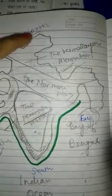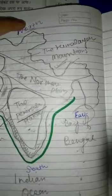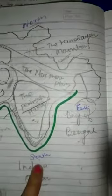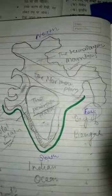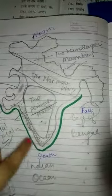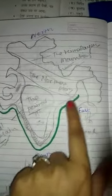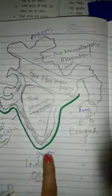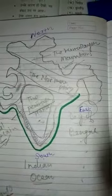This is your map of India, and this is north, south, east, and west directions. Here we have the Western Ghats, and here we have the Eastern Ghats.